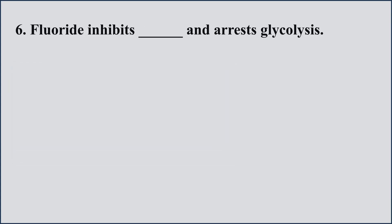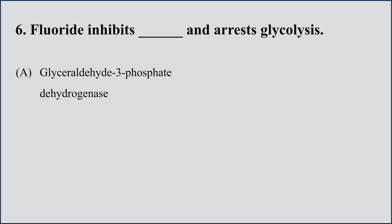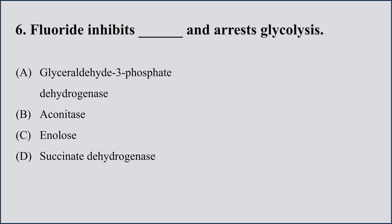Question number 6: Fluoride inhibits which enzyme and arrests glycolysis? Option A: glyceraldehyde-3-phosphate dehydrogenase. B: aconitase. C: enolase. D: succinate dehydrogenase. The right option is C, enolase. Enolase is the enzyme that catalyzes the second last reaction of the glycolysis pathway. Fluoride inhibits enolase and thereby inhibits the glycolytic pathway.